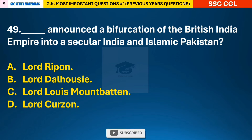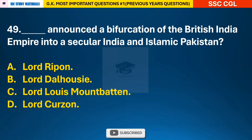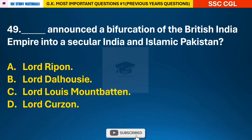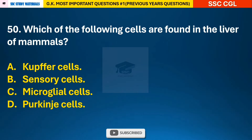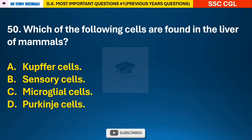Question 49: Who announced a bifurcation of the British India Empire into a secular India and Islamic Pakistan? — answer C: Lord Louis Mountbatten. Question 50: Which of the following cells are found in the liver of mammals?